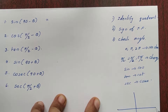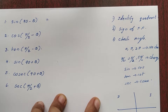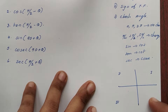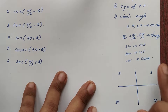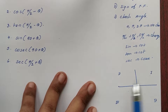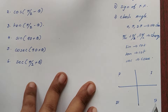This is the first quadrant, this is the second, this is the third, and this is the fourth quadrant. The quadrant is the second, this is the third, and this is the fourth quadrant.